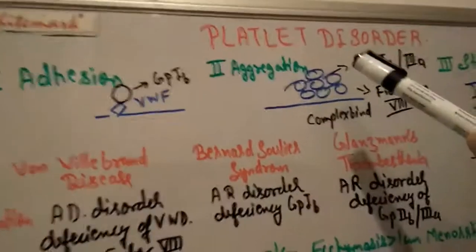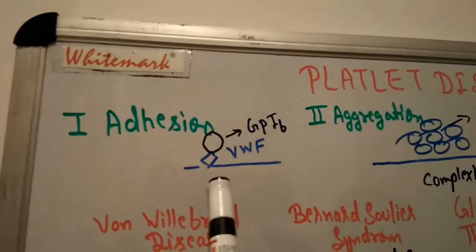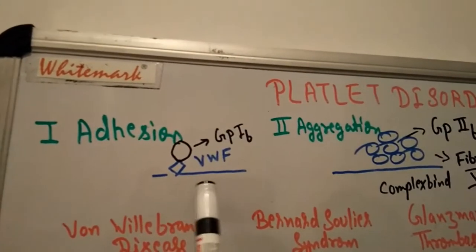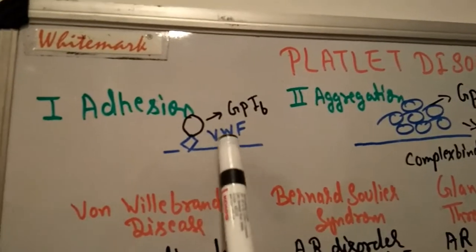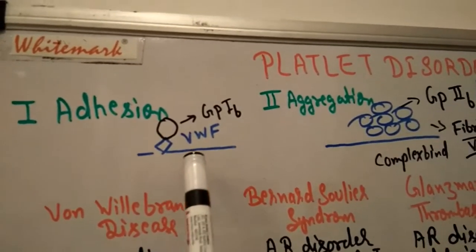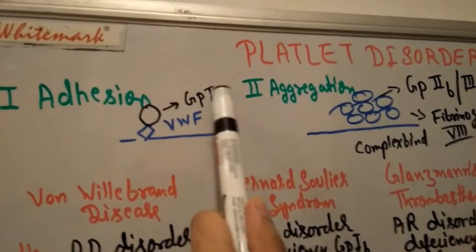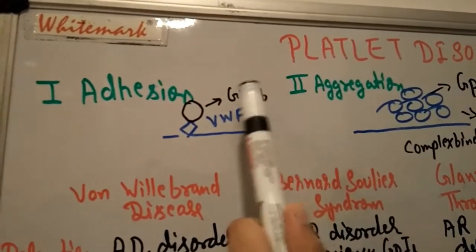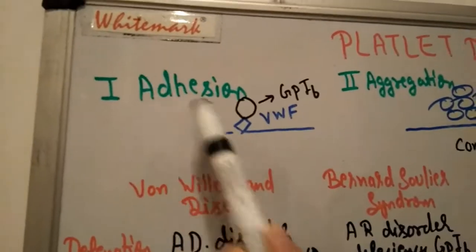When we have an injury or any cut, the endothelial layer is damaged. Then what happens? Von Willebrand factor is released, and glycoprotein 1B attaches with von Willebrand factor on the surface of injury. Then adhesion occurs.